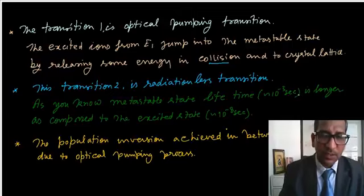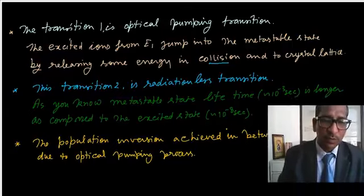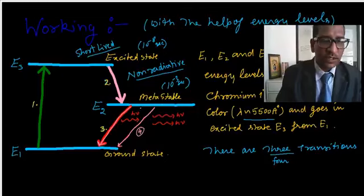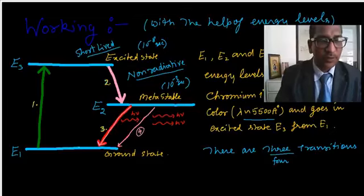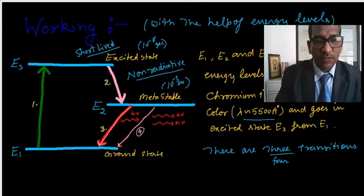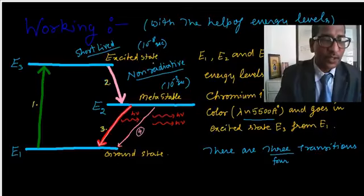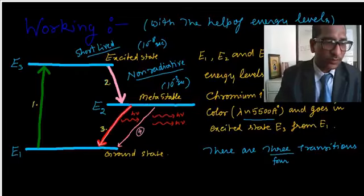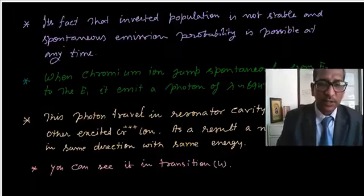Metastable lifetime is 10^-3 seconds, much longer compared to excited state which is 10^-8 seconds. This is 5 times more, so ions accumulate in the metastable state. The number of ions becomes more and more, achieving population inversion between E2 and E1.